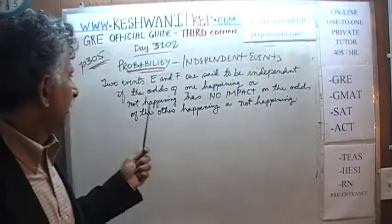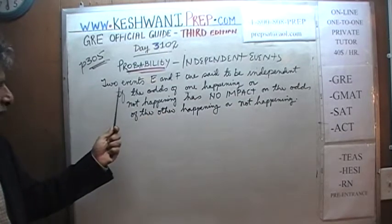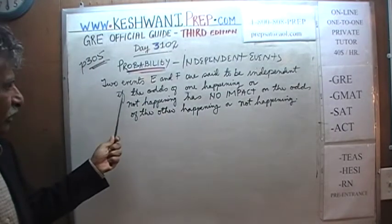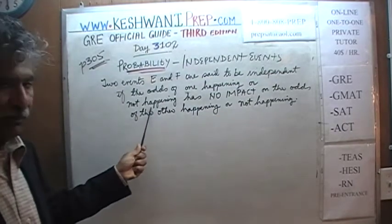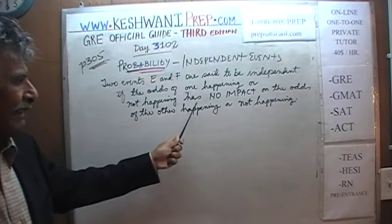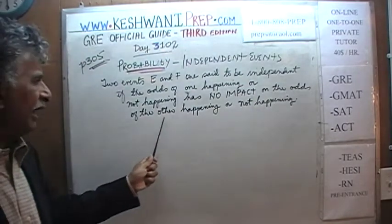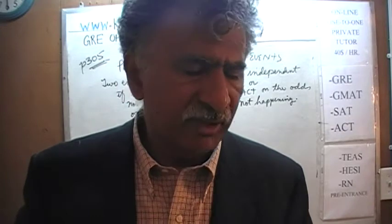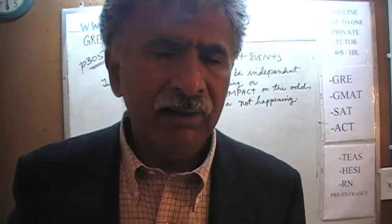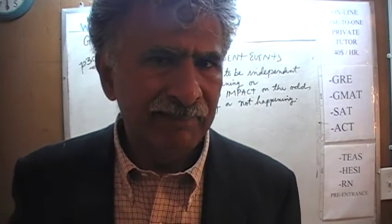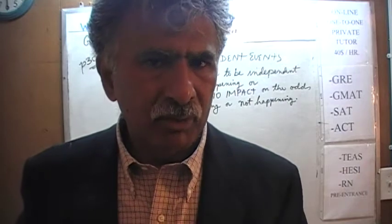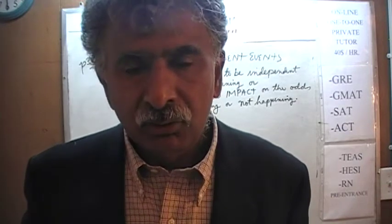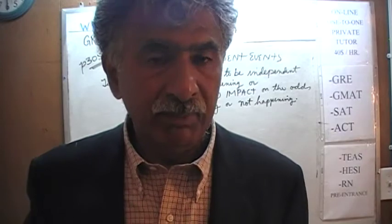What does it mean for two events to be independent? If two events — let's call them E and F — are said to be independent, it means the odds of one event happening has absolutely no impact on the odds of the other event happening. The probability of the second event is not influenced by whether or not the first event took place. They have nothing to do with each other — they are independent.